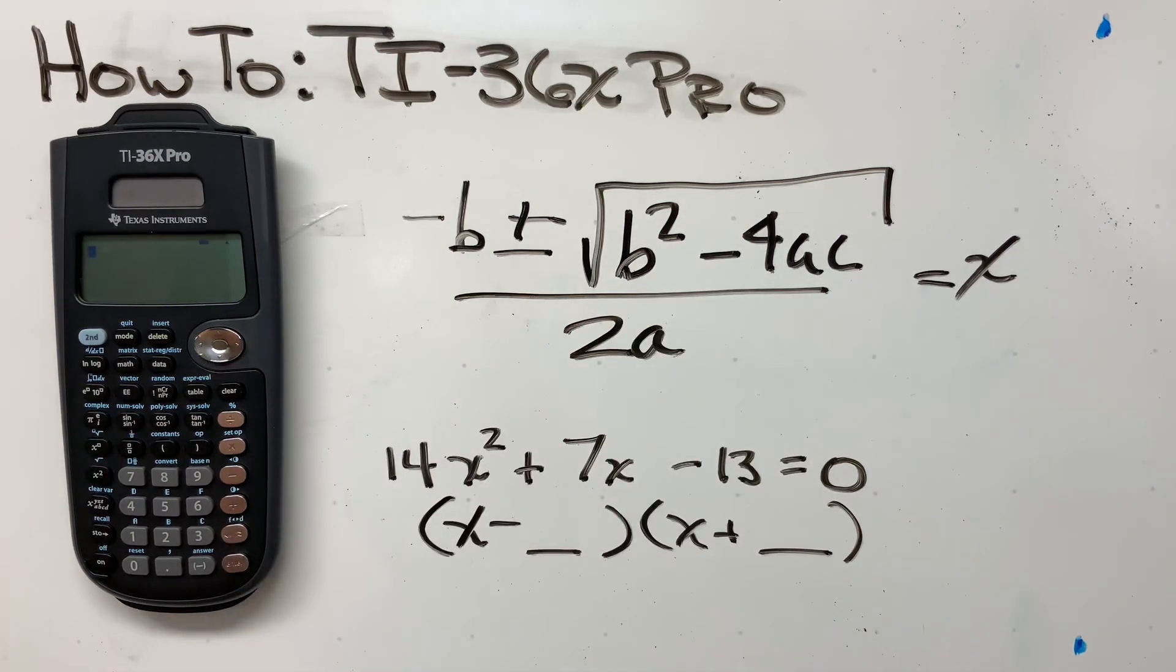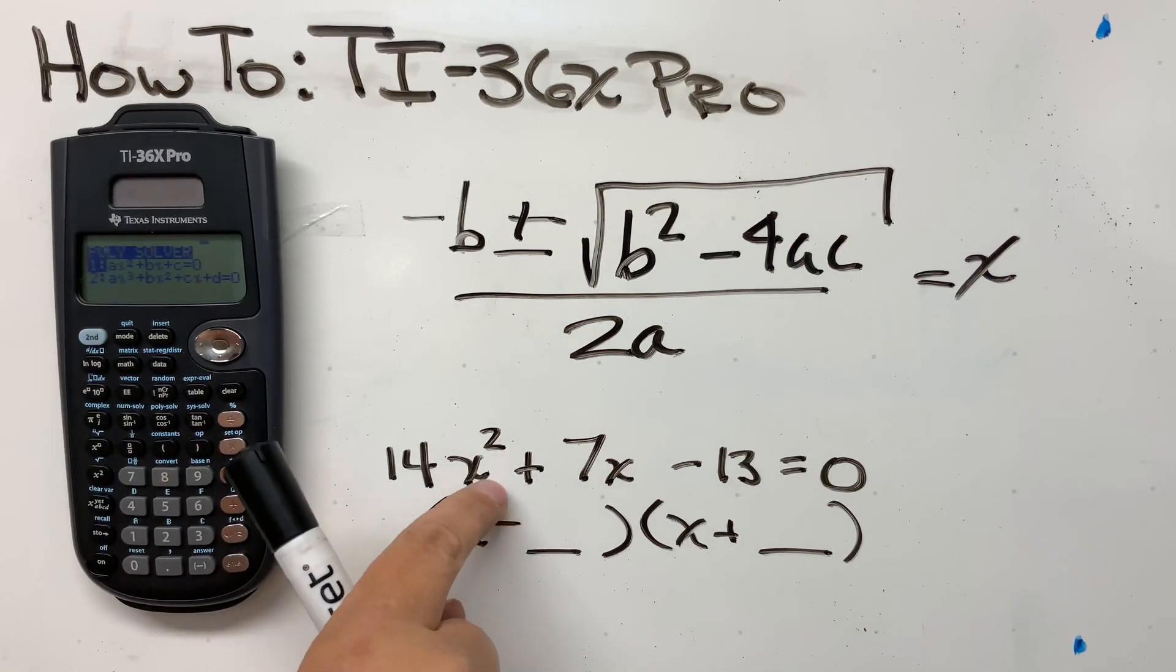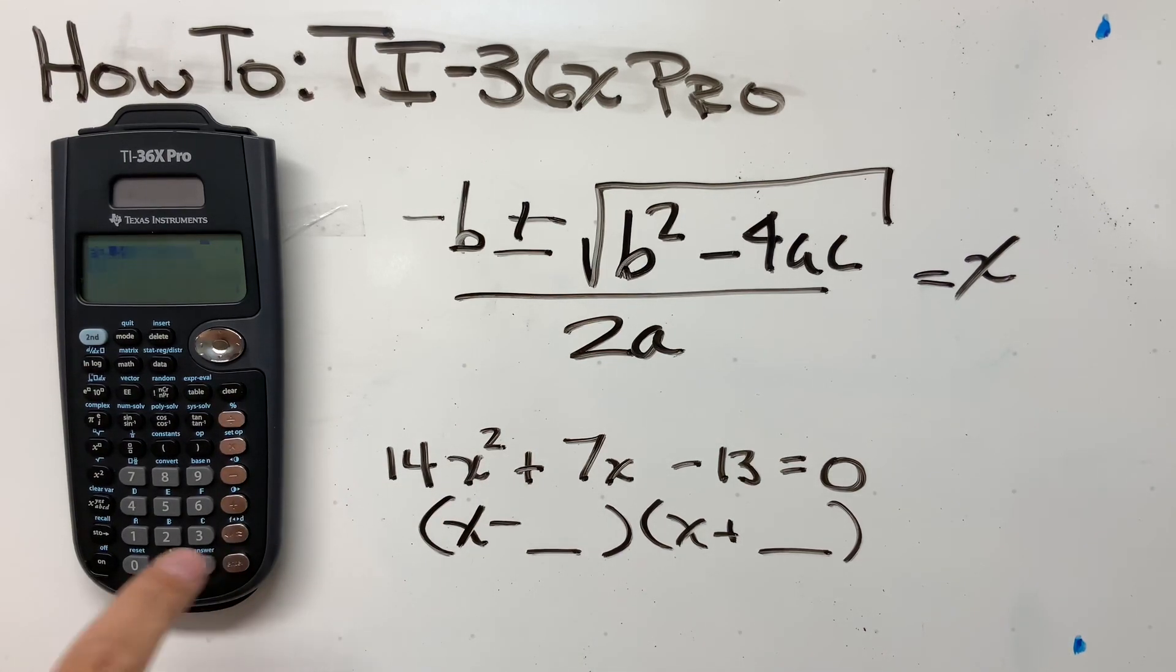Just use your quadratic equation. Okay, and on your TI-36, that's super easy. All you have to do is go second, polysolve. You're asked if you want to do a second order or a third order. This one has a square term. It's a second order. So you'll hit enter.